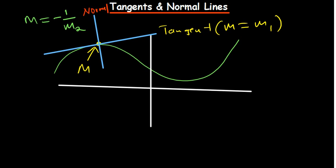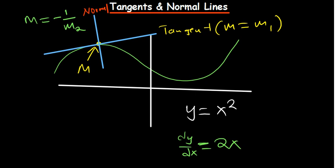The other key thing under calculus is the derivative. For example, if you have the equation y equals x squared and you determine the gradient function — the dy/dx — it is going to be 2x. As we discussed in the introduction using first principles, this is called the gradient function, meaning it can help you find the gradient of a curve at any given point by substituting the value of x.